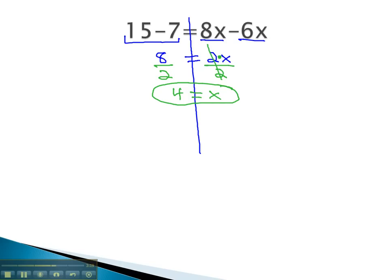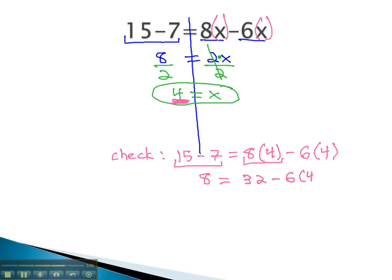Let's verify that that's the correct answer by replacing each of our x's with the 4. The original problem said 15 minus 7 equals 8x, or 8 times 4, minus 6x, or 6 times 4. The left side of the equation, 15 minus 7, is still 8. On the right side, multiplying left to right, 8 times 4 is 32, minus 6 times 4. We want to know, is this equal to 8?